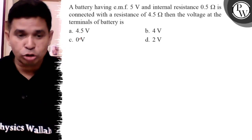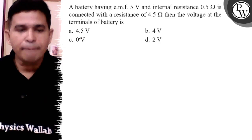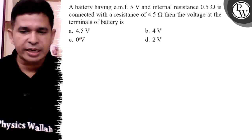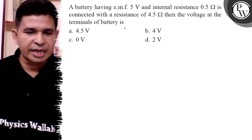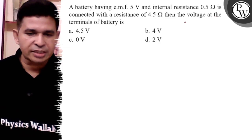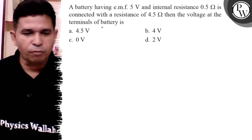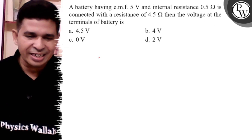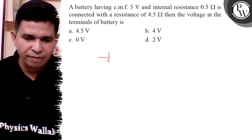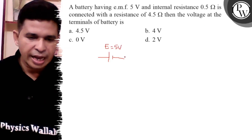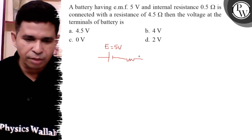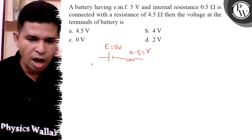Hello students, let us see this question. A battery having EMF 5 volt and internal resistance 0.5 ohm is connected to an external resistance. The EMF E is given as 5 volt and internal resistance small r is given as 0.5 ohm.